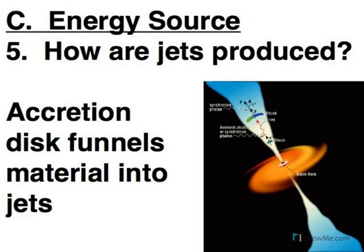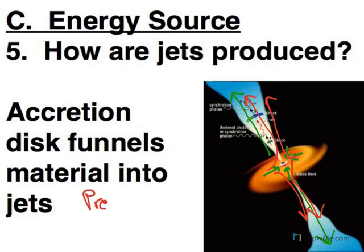Jets. The jets are getting shot out of the black hole perpendicular to the accretion disk. What's happening is pressure builds up as you get closer and closer to the event horizon. Not everything actually falls into the black hole — some of that pressure has to be released. So you get this release of pressure in the form of jets shooting out just prior to the event horizon, with material shooting out due to pressure near the event horizon.